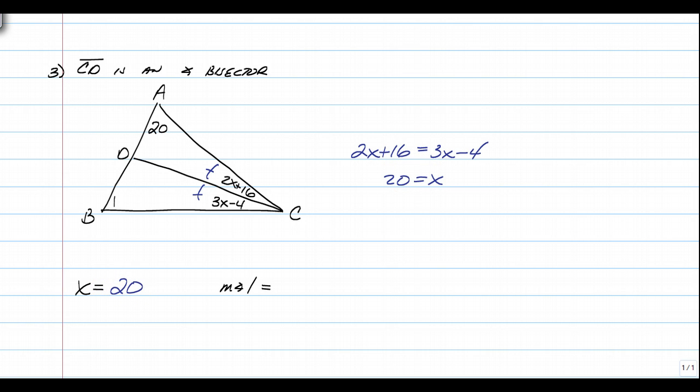Now that we have 20, we have to use it to find the measure of angle 1. So we're going to substitute 20 back in. So 2 times 20 plus 16 is going to give us 56, and we know this is supposed to be the exact same, but a lot of times you want to plug it back in just to be sure that you did it correctly. So 3 times 20 is 60 minus 4 is still 56. So you know you did that part correctly.